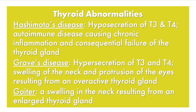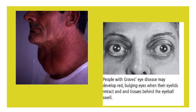Some abnormalities of the thyroid include Hashimoto's disease, which is a hyposecretion — a low amount of T3 and T4 hormones. It's an autoimmune disease that attacks the body, causing chronic inflammation and failure of the thyroid gland. Then there's Graves' disease, which is a hypersecretion of T3 and T4, causing swelling of the neck and protrusion of the eyes. Another type of hypersecretion creates a goiter — an enlarged thyroid gland that looks like a huge bubble developing on the neck. On the left you have the swelling of the thyroid, and on the right, Graves' disease with bulging of the eyes.